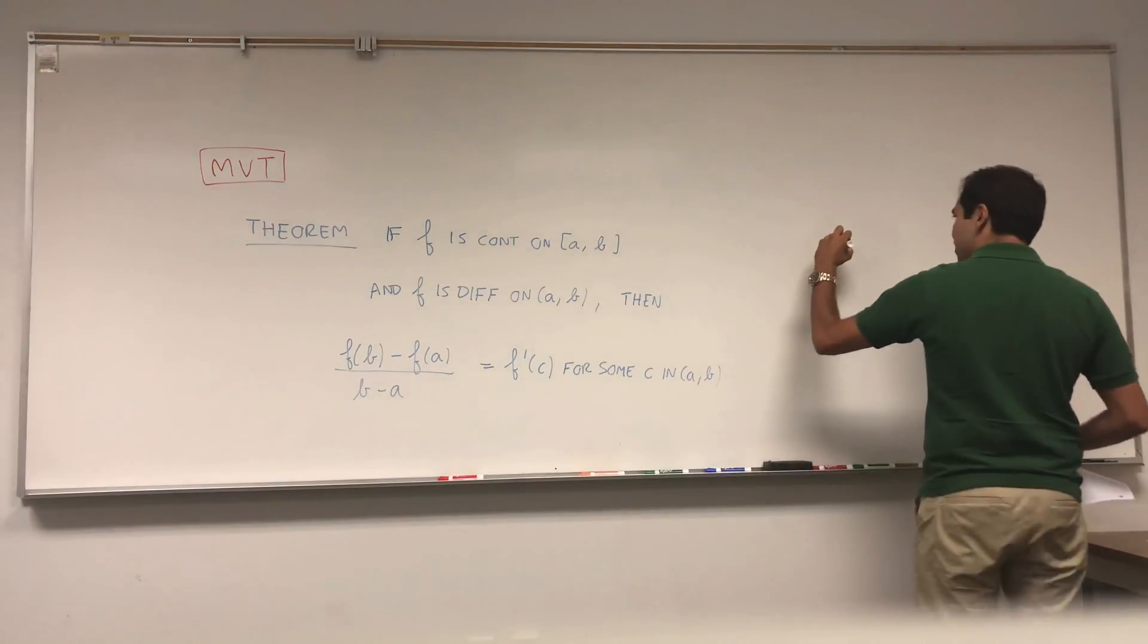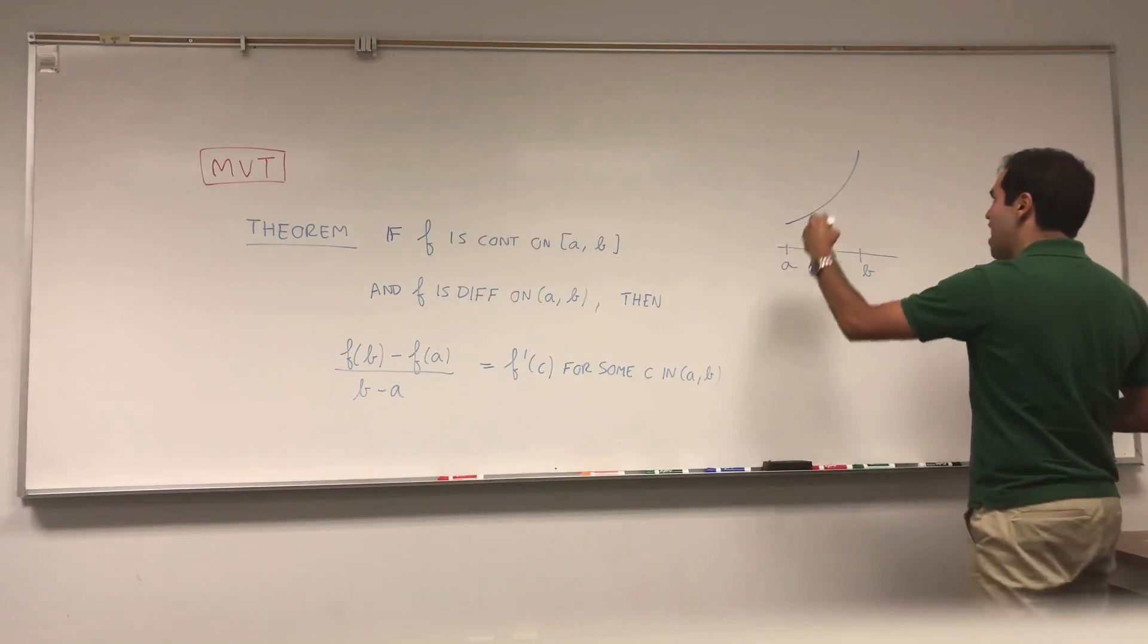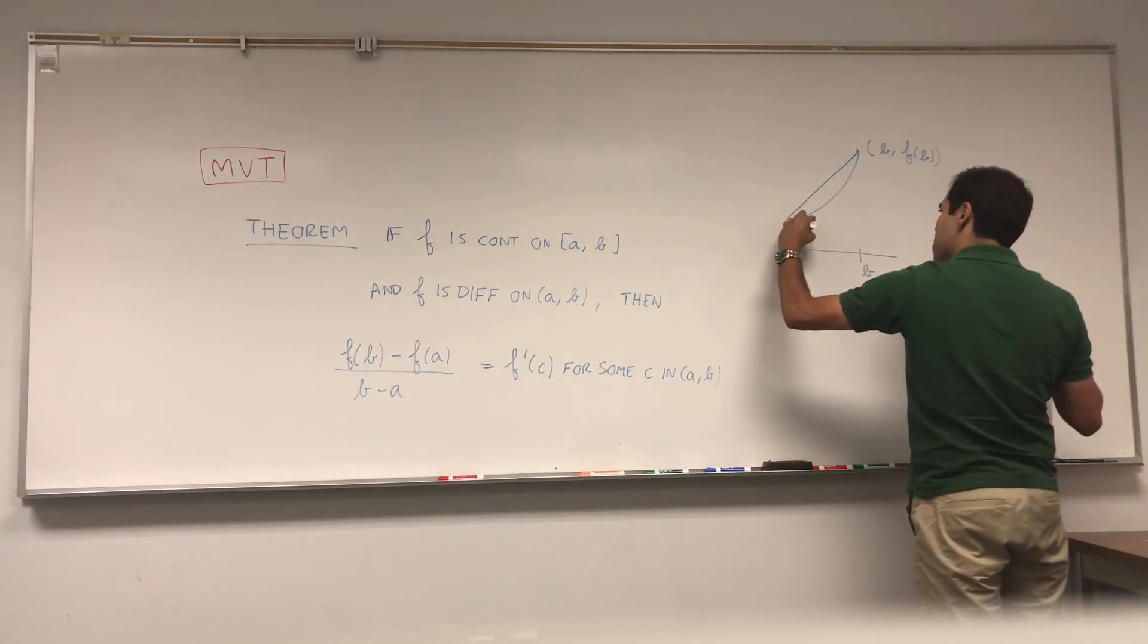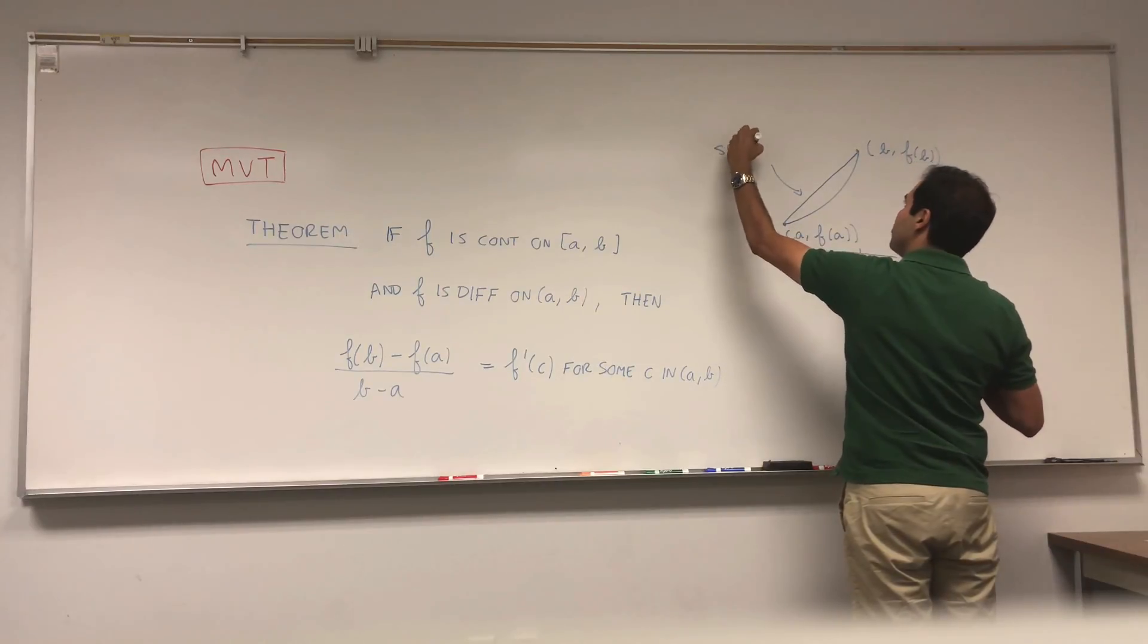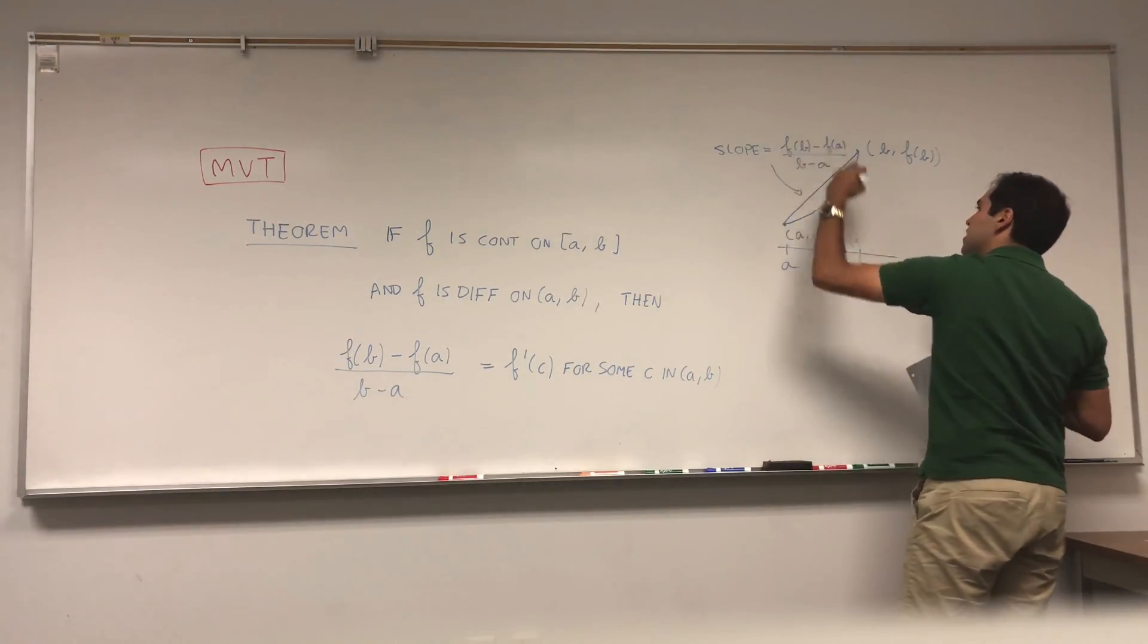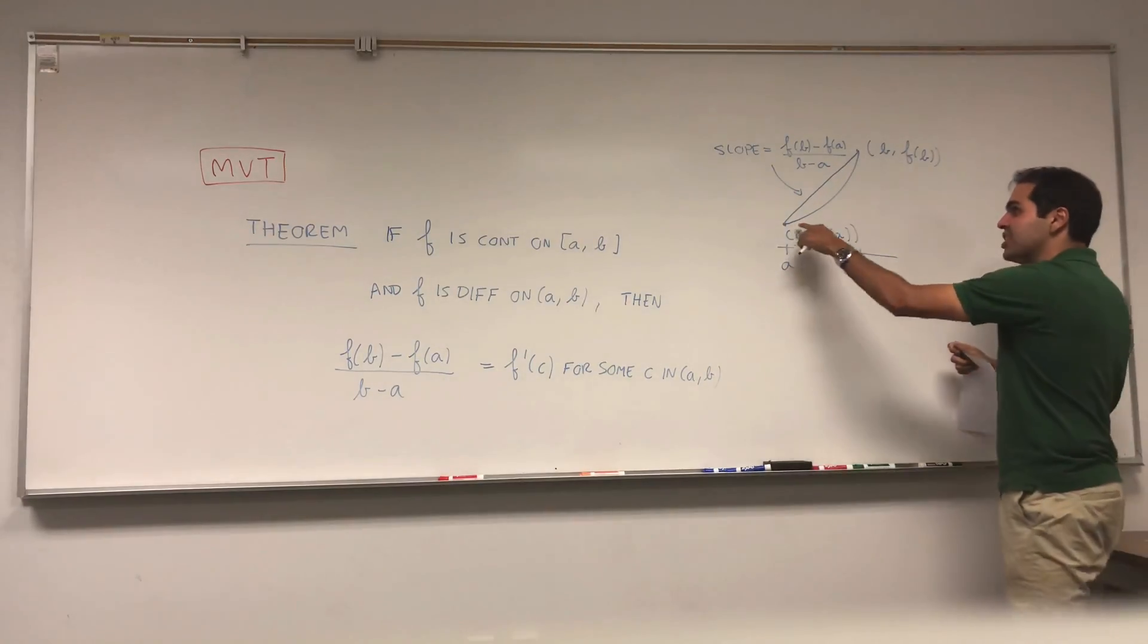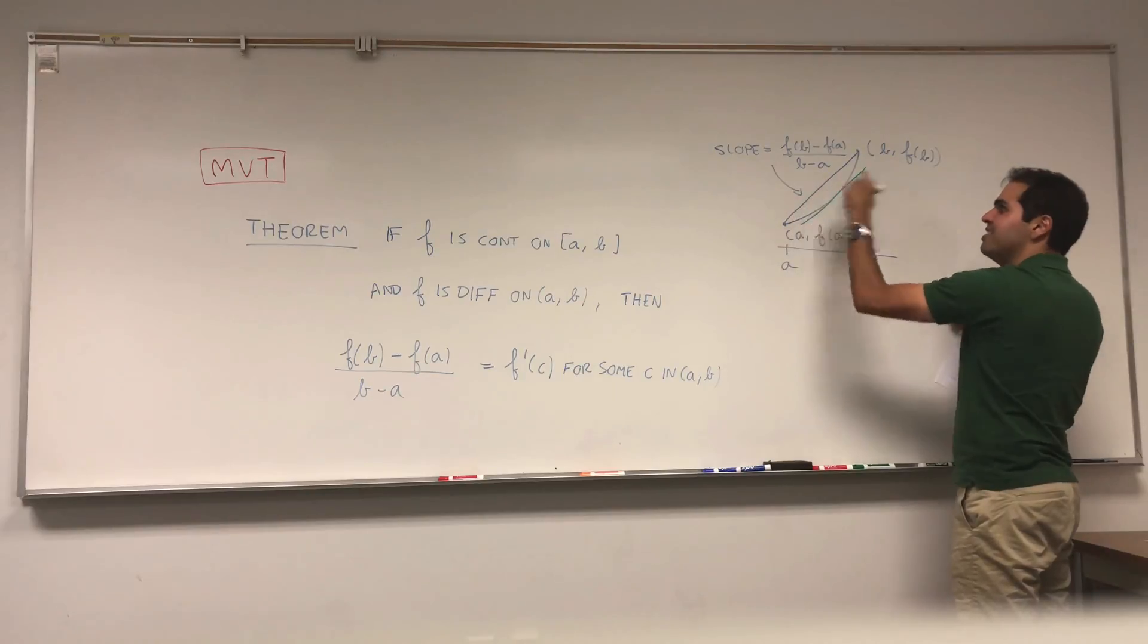It turns out, if you have two points A and B, and this is your function, then this quantity f(b) minus f(a) over b minus a is just the slope of this secant line. So it's the slope of the line connecting (B, f(b)) and (A, f(a)). So the slope of that line, by the slope formula, equals f(b) minus f(a) over b minus a. On the one hand it's the slope. On the other hand, this theorem tells you that this slope can be written as a derivative.